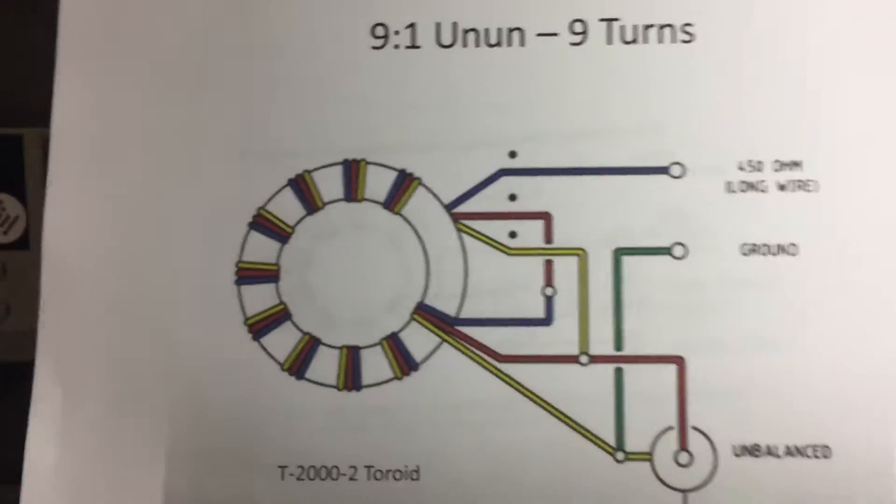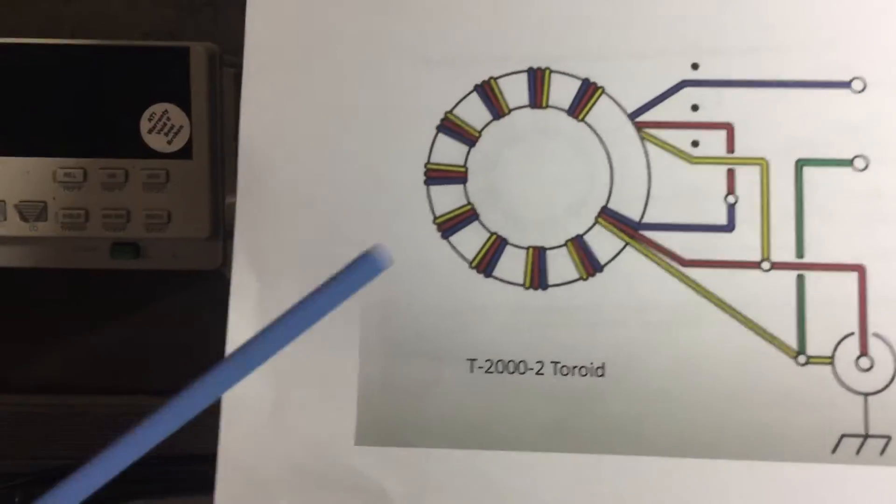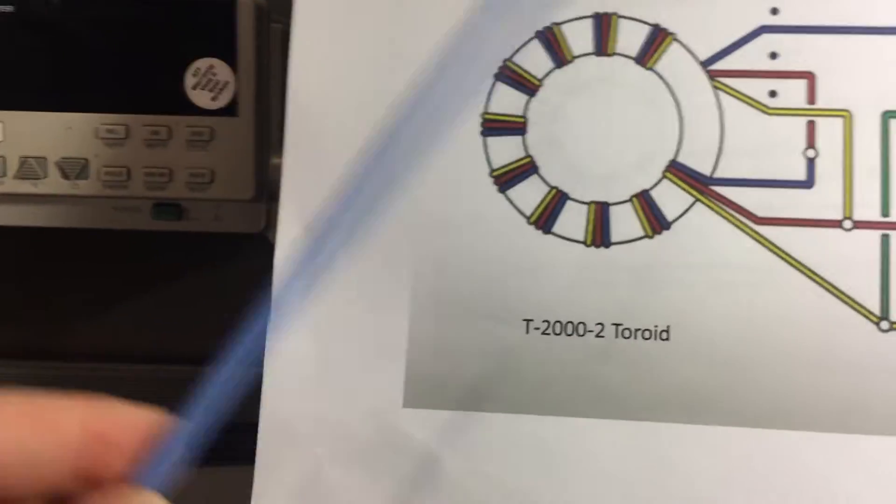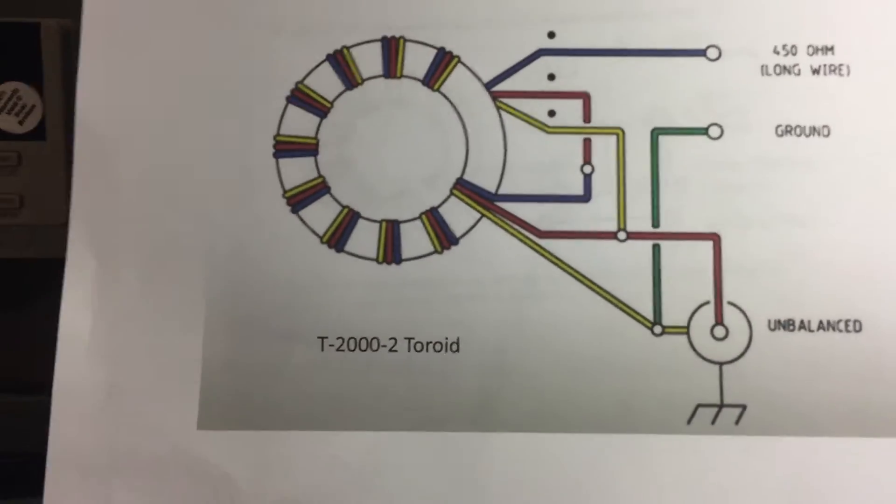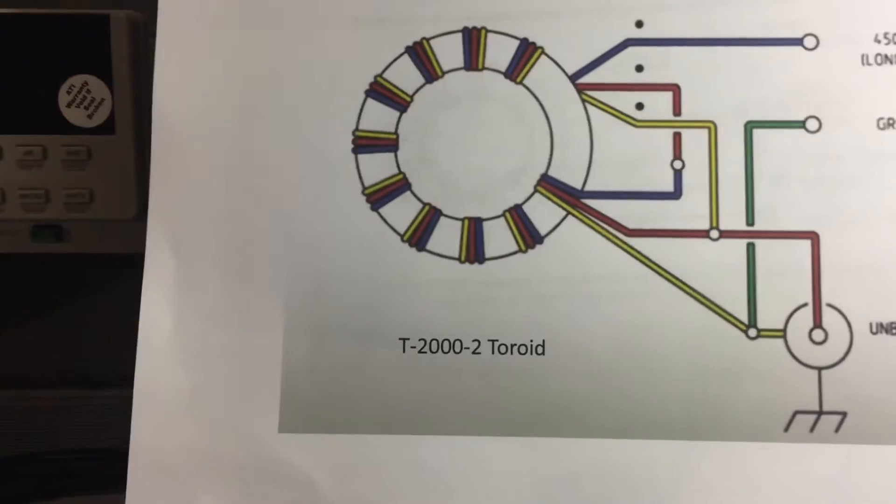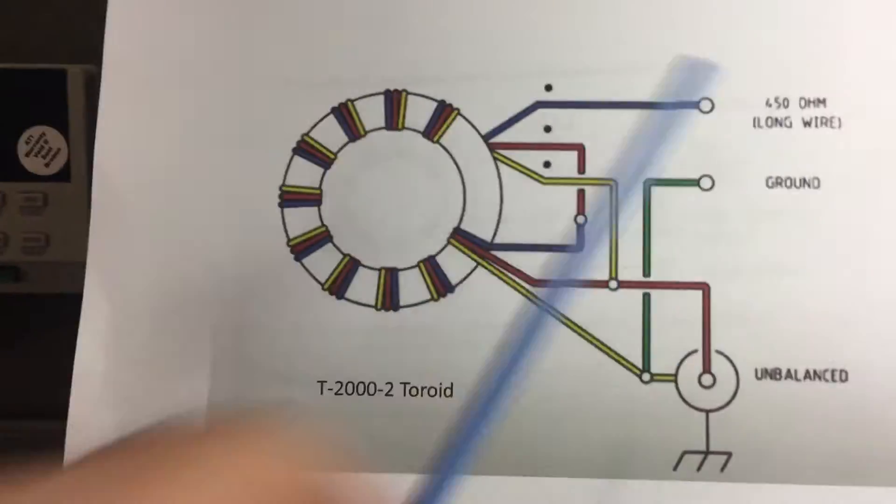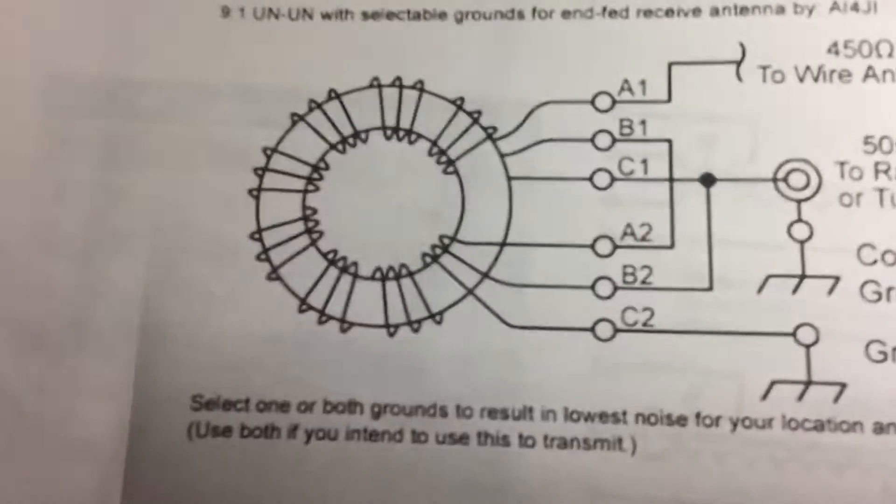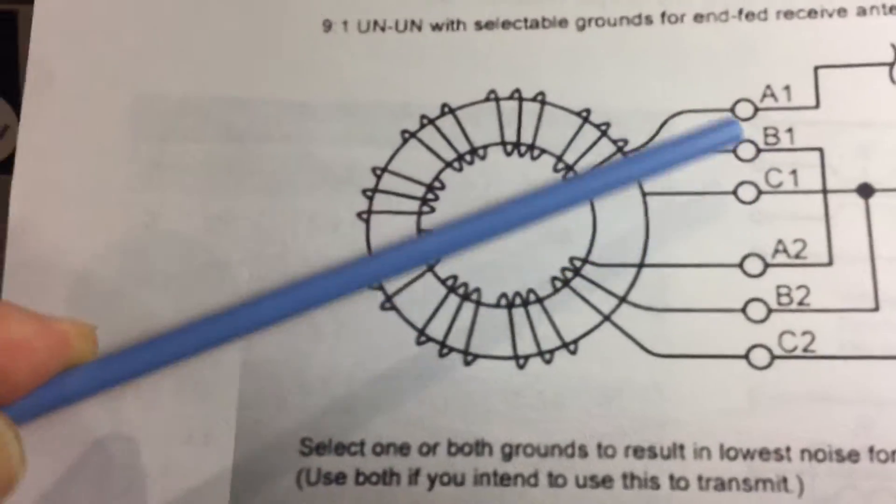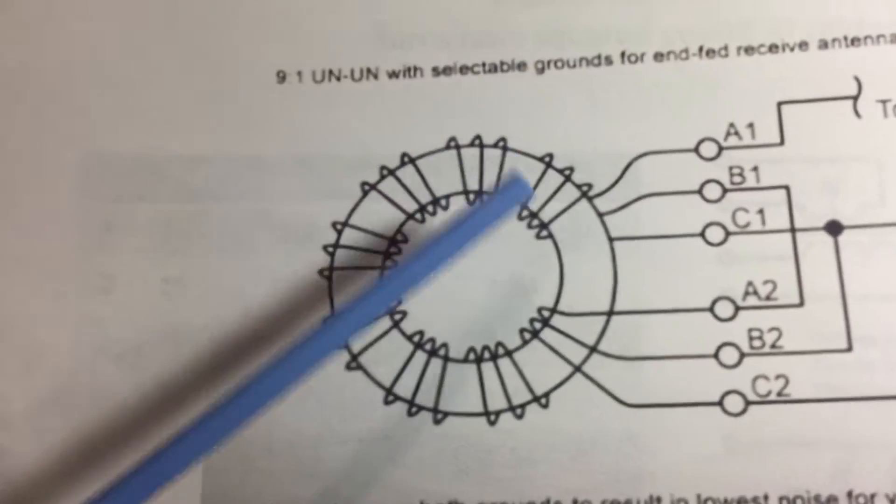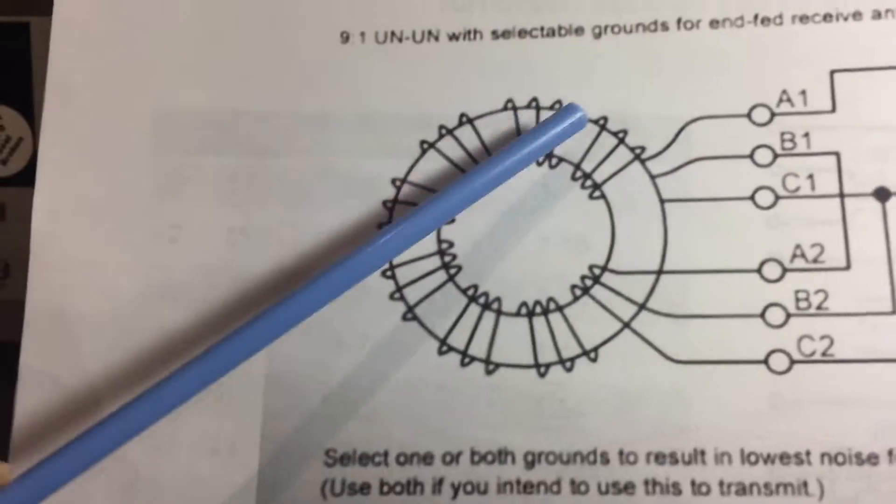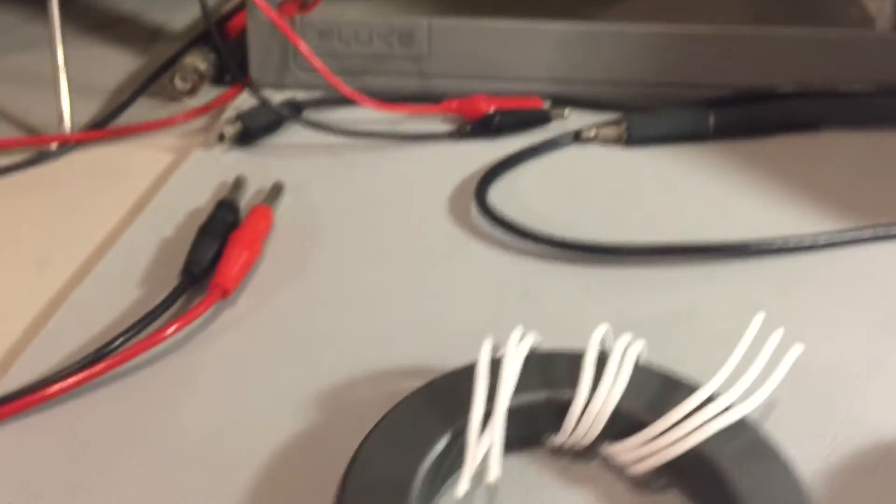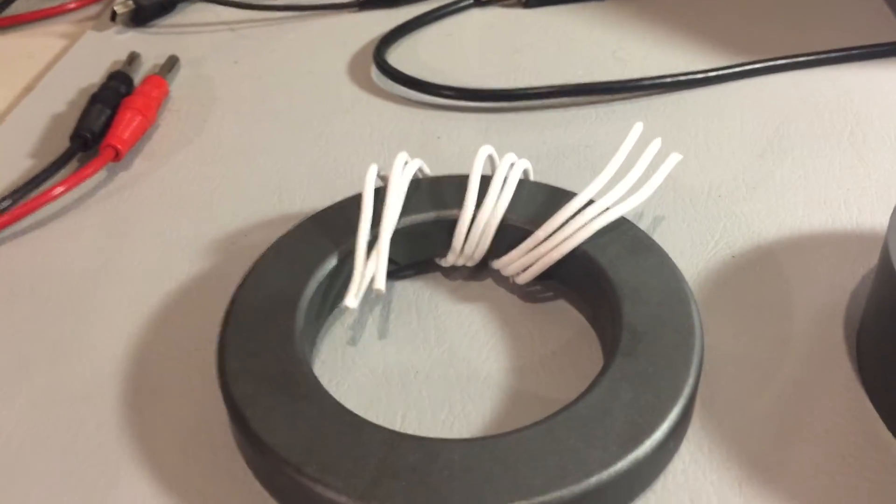Now here's a typical diagram that you'll see, and again it's referencing material 2. And we're going to talk a little bit about some of the other materials that are available and how they compare. And again, this is an unun. Now this diagram might be a little easier to follow. It has the individual wires labeled. So basically you're taking three wires and wrapping it around nine times around the toroid.